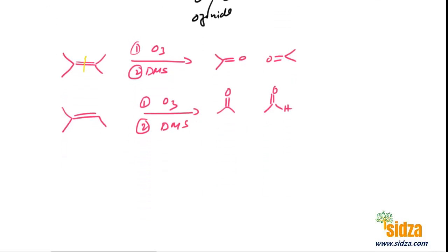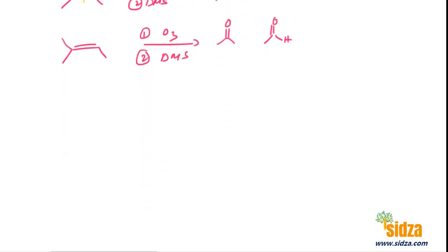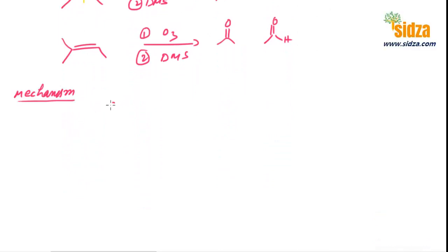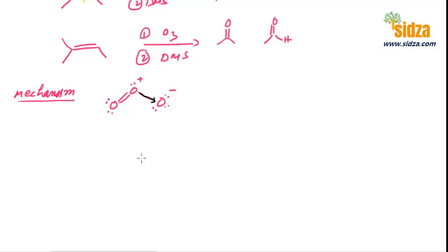Now let's look at the mechanism — how we get these products and what are the steps in reductive ozonolysis. Ozone, if we draw the electron dot structure, has oxygen double-bonded to a central oxygen, with two lone pairs here, one electron pair here, and three electron pairs there. There is a formal positive charge on the central oxygen and a negative charge on the terminal oxygen, because it is actually a coordinate bond — the electron pairs are donated by the central oxygen atom, making it formally positive while the terminal oxygen is formally negative.